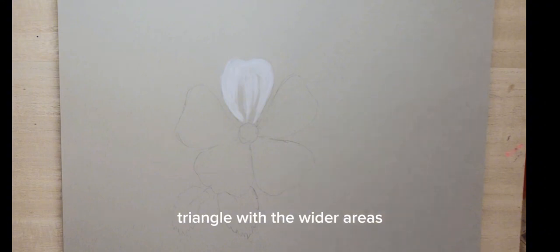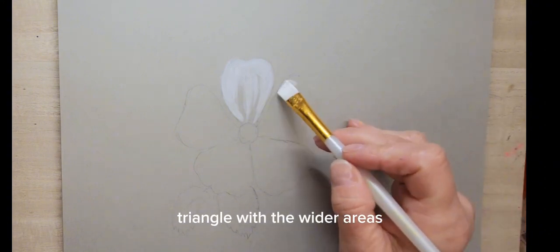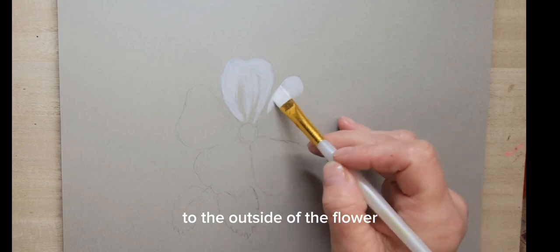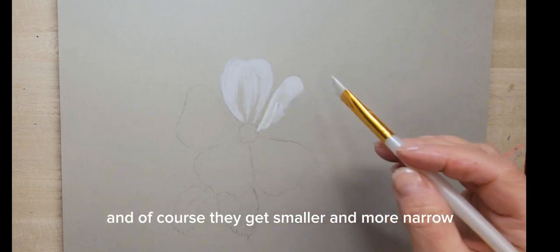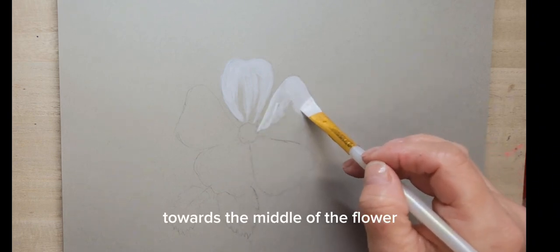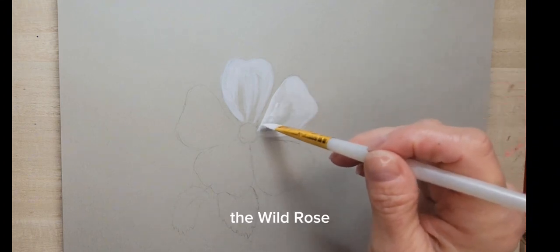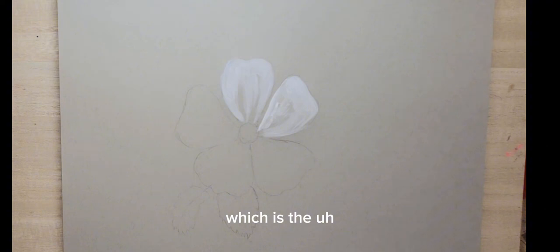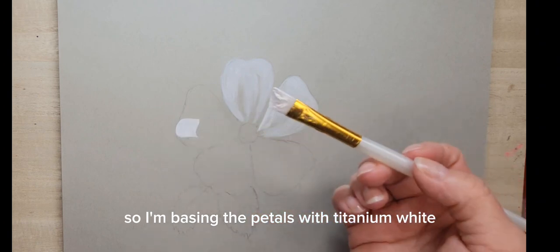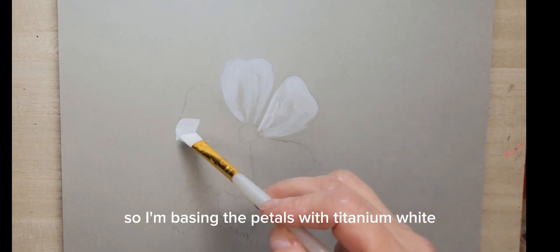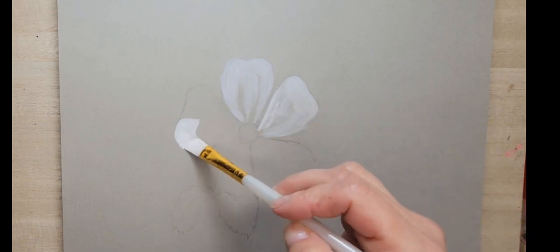I like to describe the petal shapes as kind of like a rounded triangle with the wider areas to the outside of the flower. Of course they get smaller and more narrow towards the middle of the flower, towards the little circle in the middle, which is the rose hip.